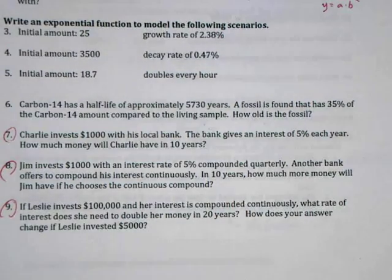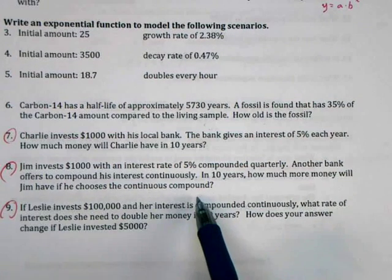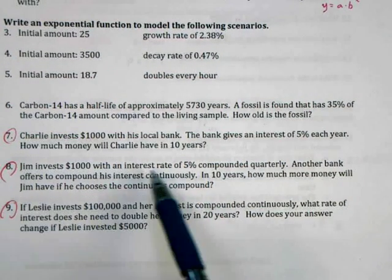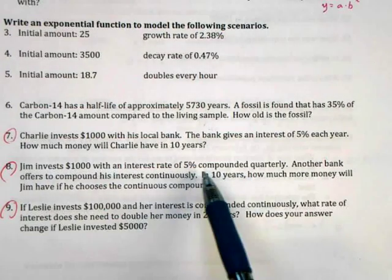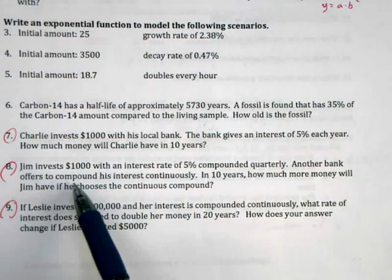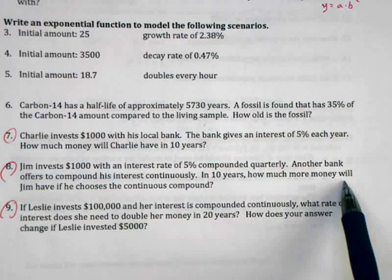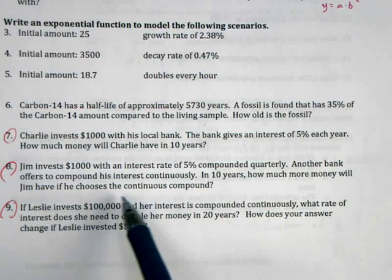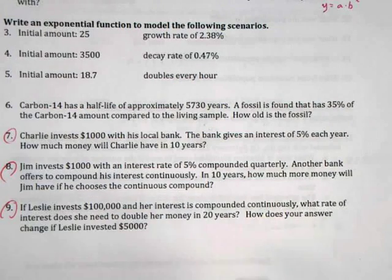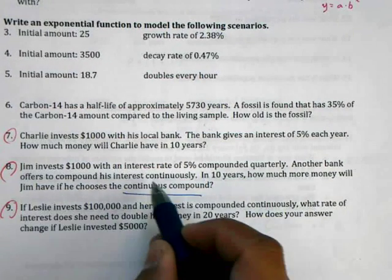I want to turn our attention here to number eight. Jim invests $1,000 with an interest of 5% compounded quarterly. Another bank offers to compound his interest continuously. In 10 years, how much money will Jim have if he chooses the continuous compound? The focus here is the continuous compound.